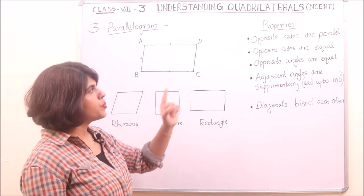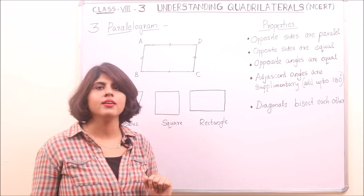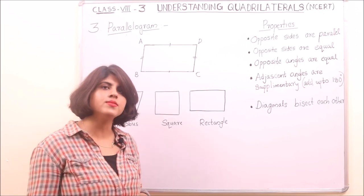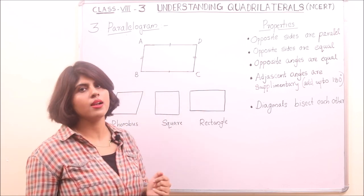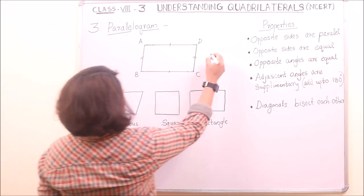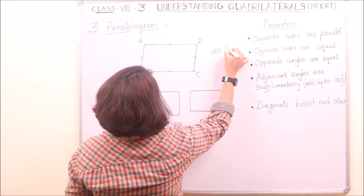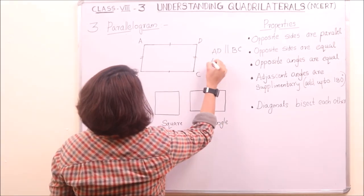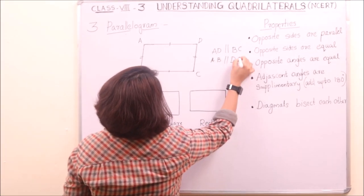Now the properties. The first property is opposite sides are parallel. By definition itself, the opposite sides of the parallelogram are parallel. So here we can say AD is parallel to BC, and AB is parallel to DC.